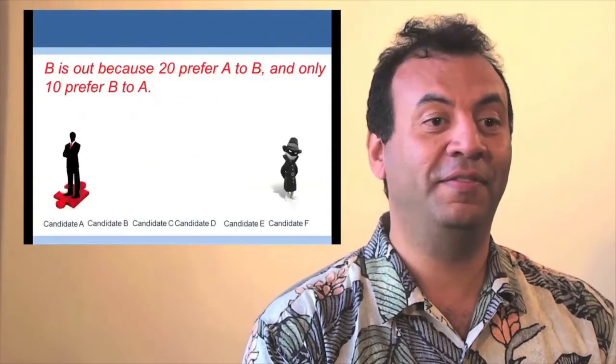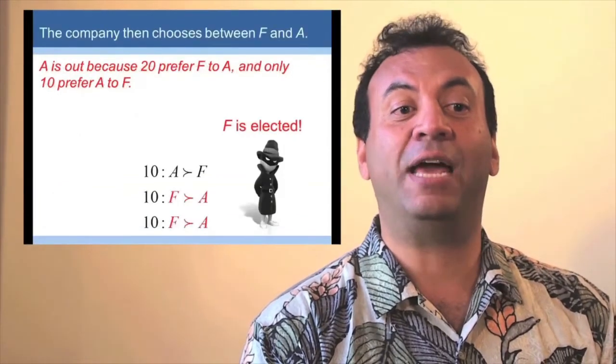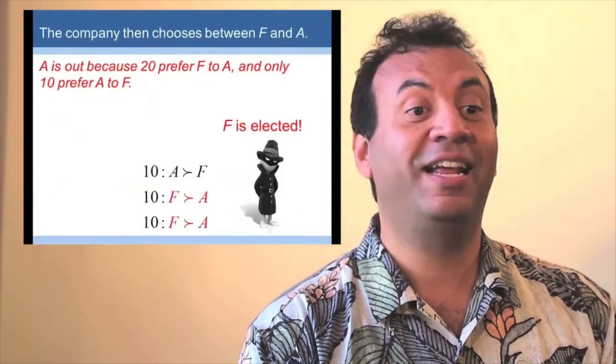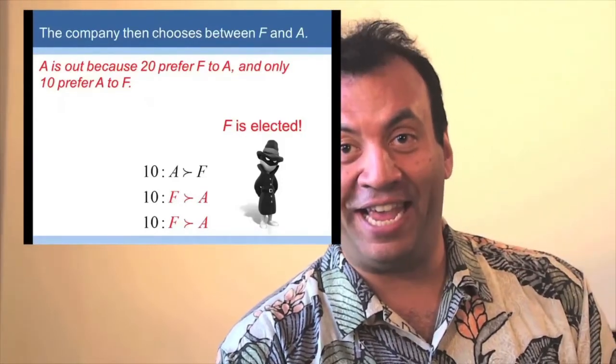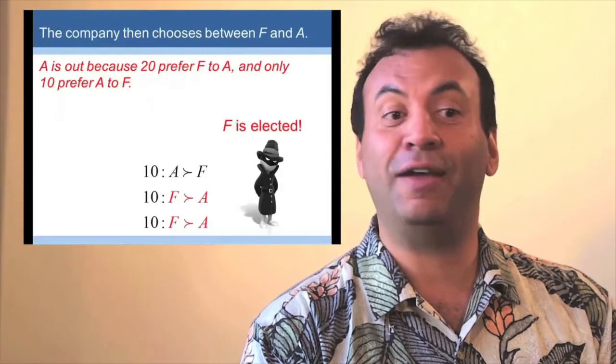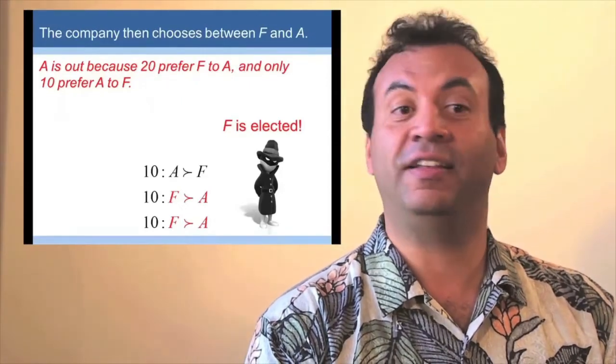We're left with A and F. Now we ask, who do you prefer, A or F? And 20 people prefer F to A and 10 prefer A to F. Therefore, F is elected.